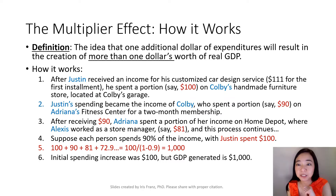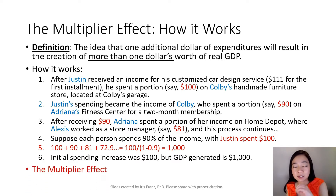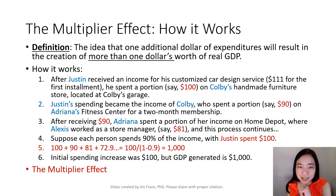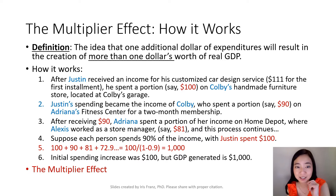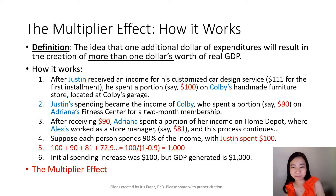Suppose after receiving this $100 for his furniture, Colby spends a portion of it, say $90, on Adriana's Phoenix Center for a two-month membership. So now Colby's spending will become Adriana's income. Now Adriana, suppose she spent a portion of it, also 90%, say $81, on Home Depot. And this process is going to continue.